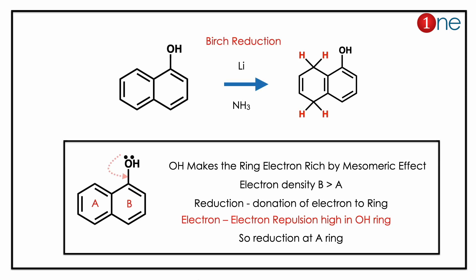Birch reduction uses lithium and liquid ammonia, breaking the aromaticity of the ring. The key question here is: where does the Birch reduction occur — at the A ring or the B ring? The answer is the A ring.